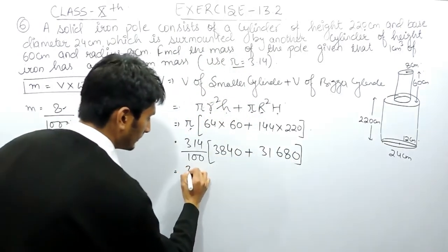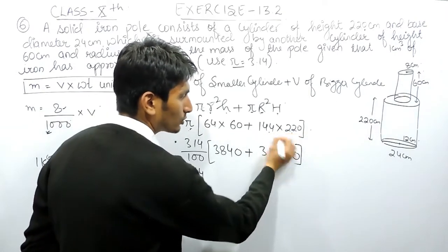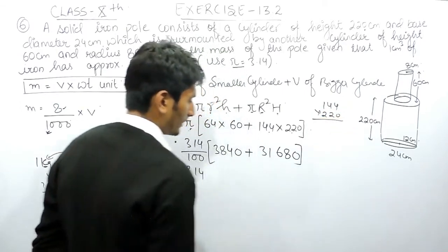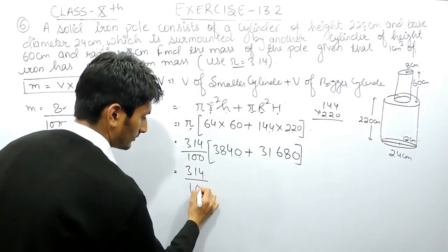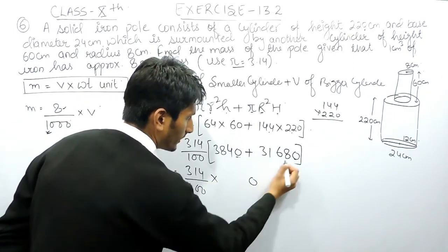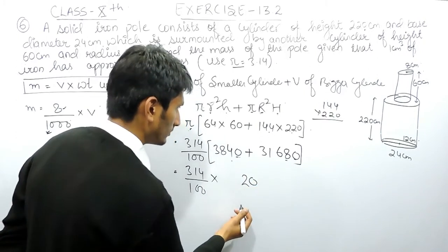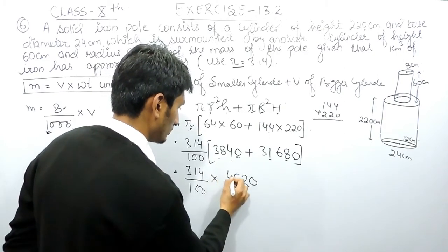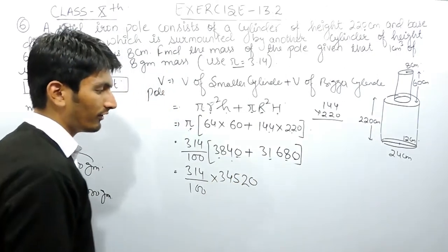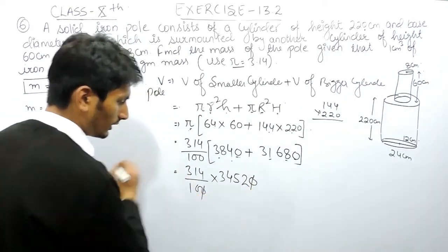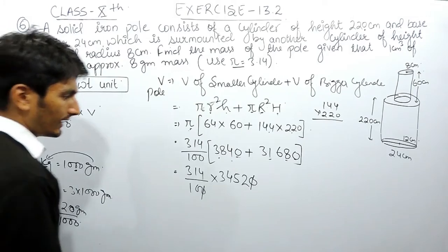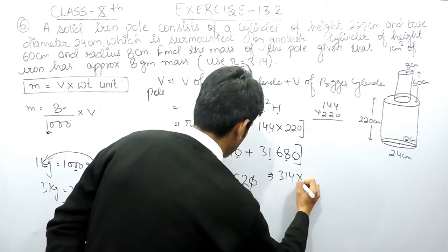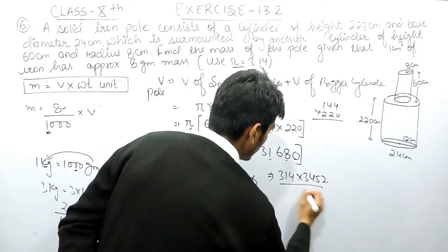Further solving, if you are not able to multiply orally you can multiply these numbers step by step. Adding 3840 and 31680, then multiplying by 314 upon 100. The combined bracket value simplifies so you multiply 314 by the sum and divide by 10, giving the volume in cm cubed.